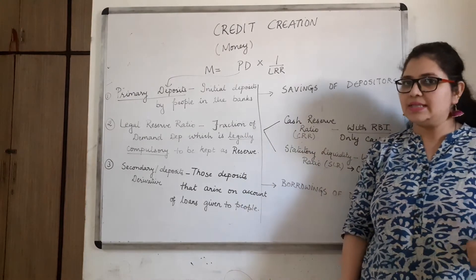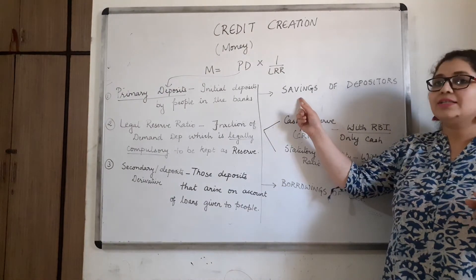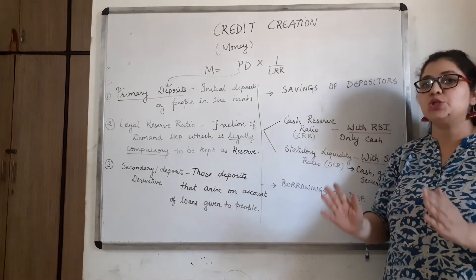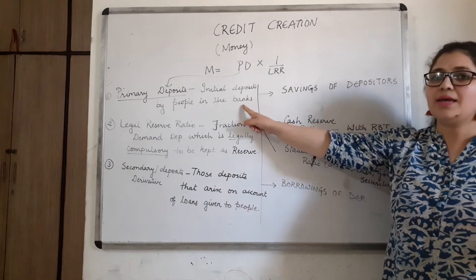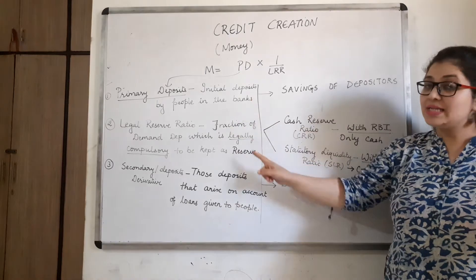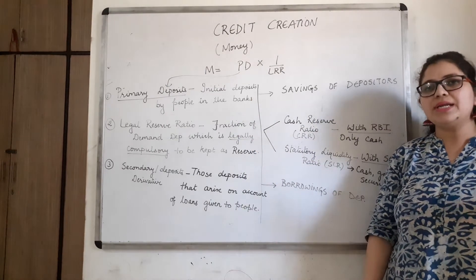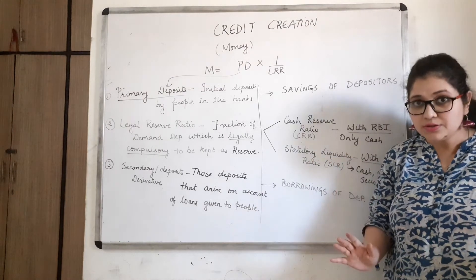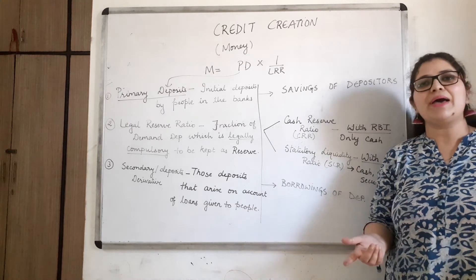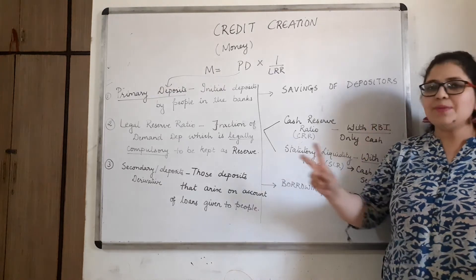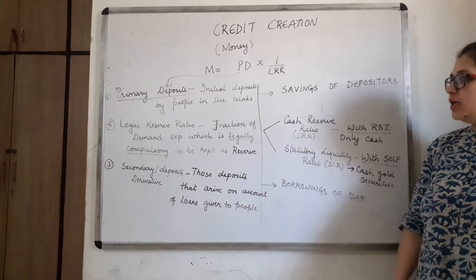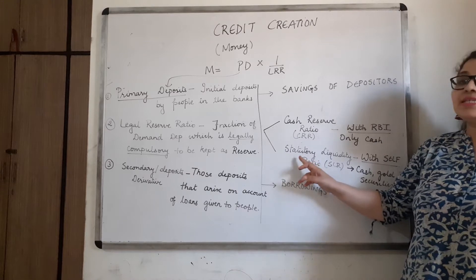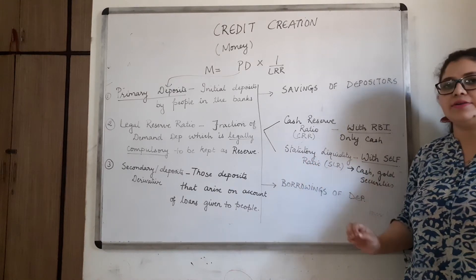Let's revisit: primary deposits are basically the savings of depositors — the total amount saved by all people in a bank. And LRR means every bank must keep a percentage of deposits in reserve for emergencies — it is legally compulsory, meaning the bank has no choice. There are two types of Legal Reserve Ratio: Cash Reserve Ratio (CRR) and Statutory Liquidity Ratio (SLR). Every bank must maintain both reserves.